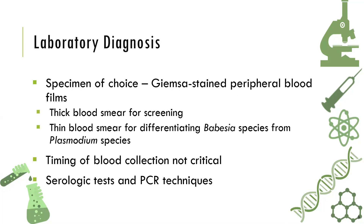The specimen of choice includes a peripheral blood smear. The thick smear is for screening and the thin smear is for differentiating Babesia species — whether it is divergens or microti. Unlike with Plasmodium, the time of blood collection is not critical.